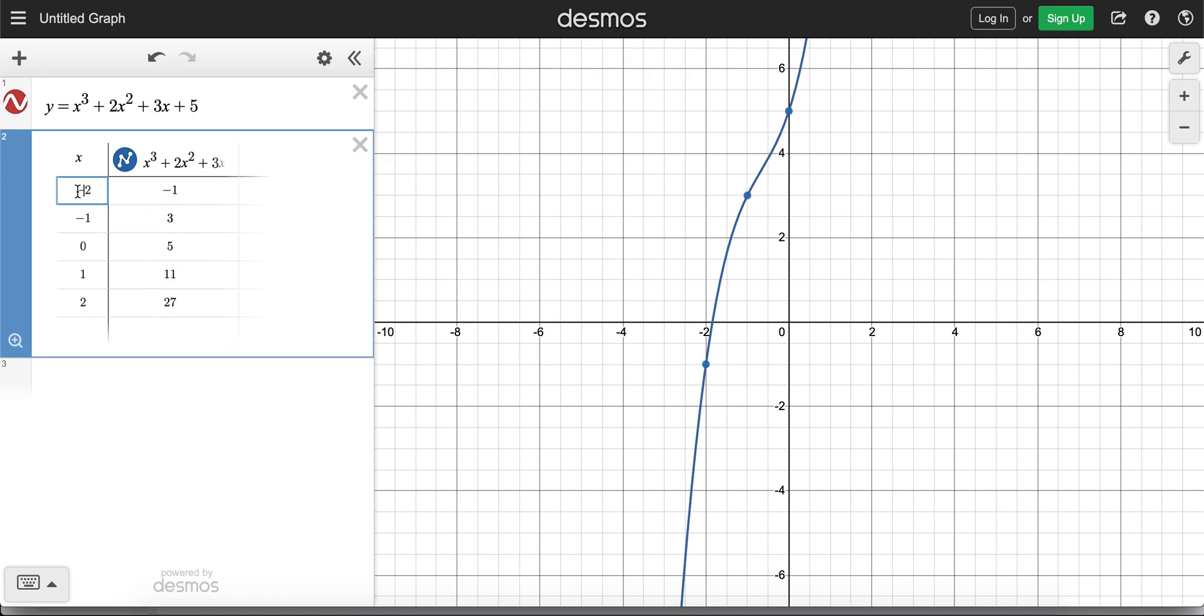So if I want to do more points than this I can change this to a different number if I want to, maybe I want to go negative 4 to positive 4. We can enter some space there and we have these values.